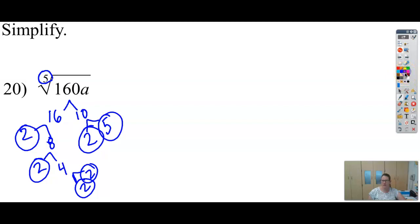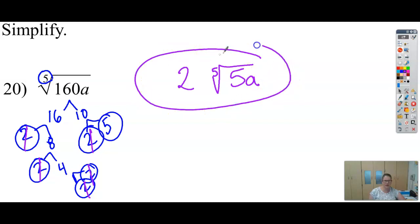I'm looking for 5 2s in order to bring 1 out. So I've got 1, 2, 3, 4, 5. So because there's 5 2s underneath, I can bring 1 outside. The 5 has to stay underneath. Again, this is still a 5th root, so I need to put a little 5 right there. And because there's only one a, the a will have to stay underneath as well.